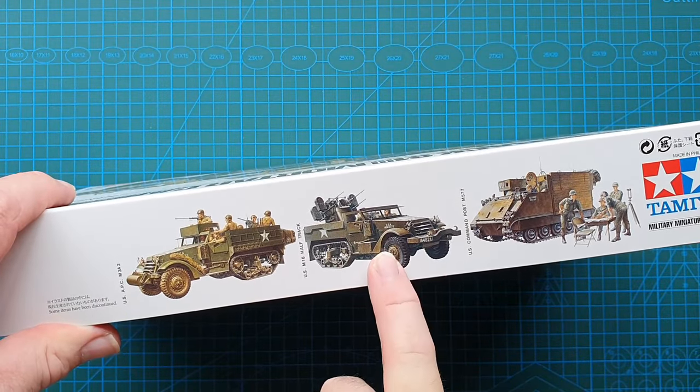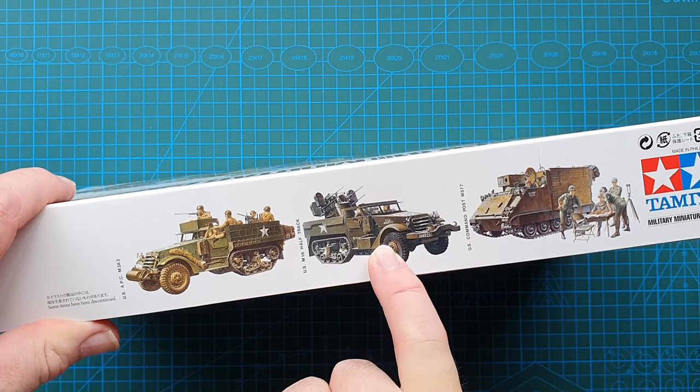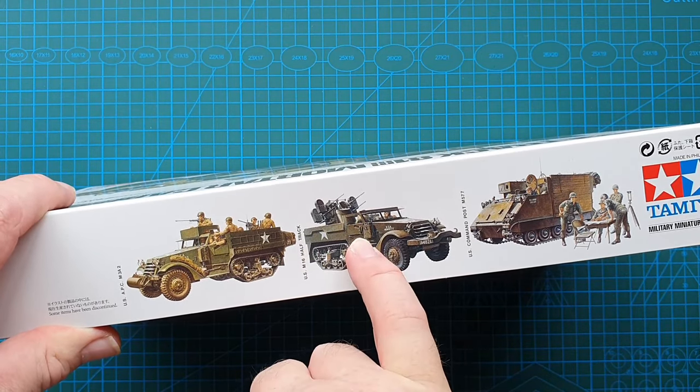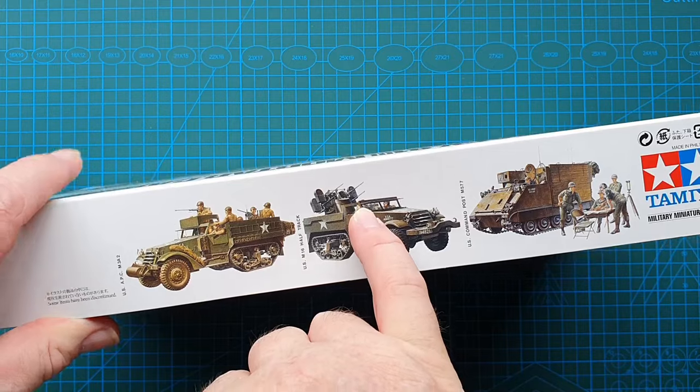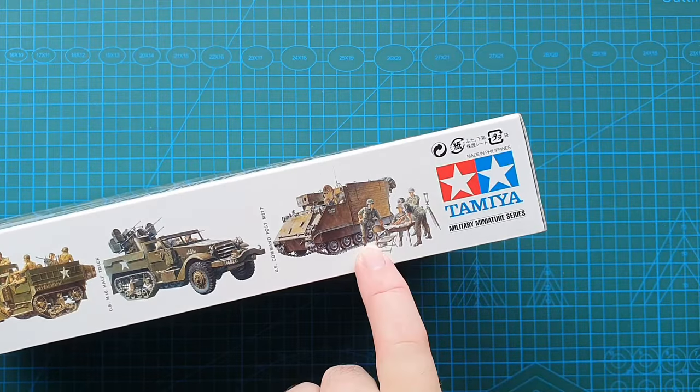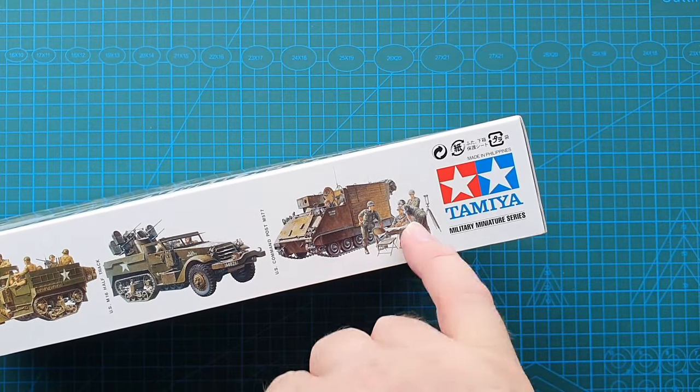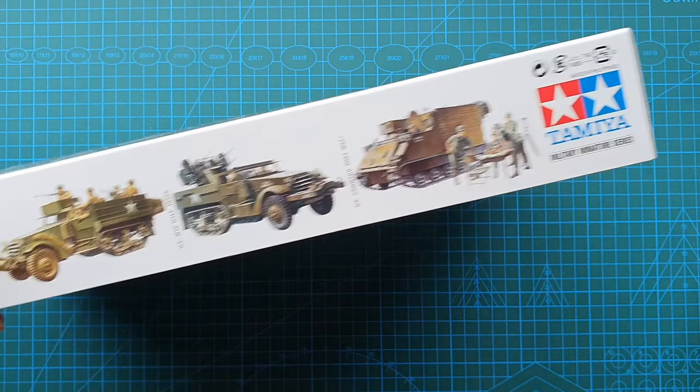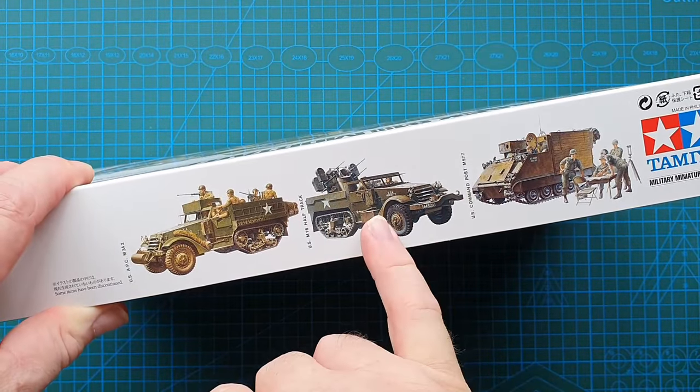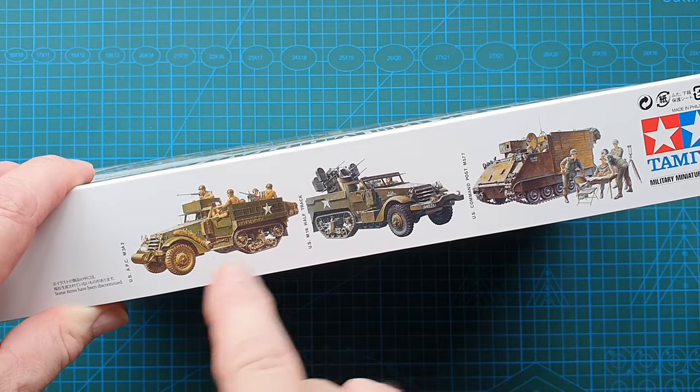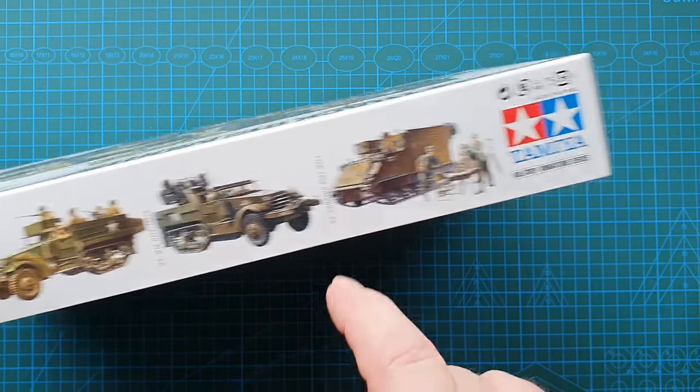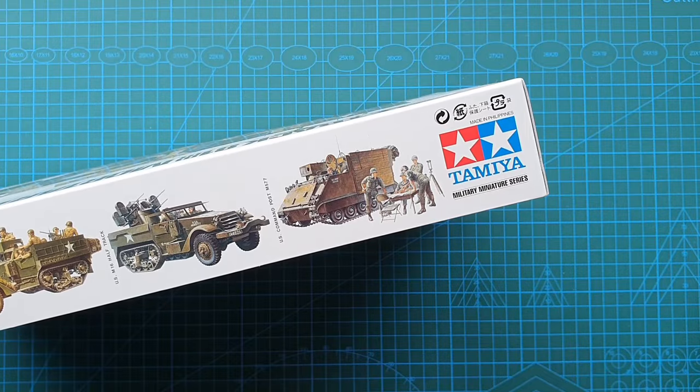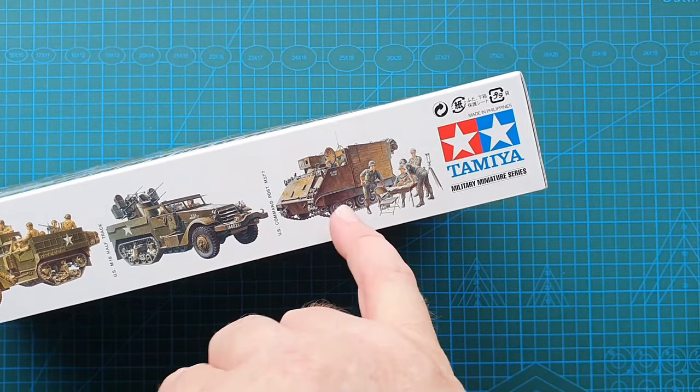On the other side you've got your standard half-track, M16 mounting a quad 50 caliber, and a Vietnam era M113 command vehicle. All of these kits I've had at one time. I do actually have this one and we'll be getting this one shortly from the new reissue.